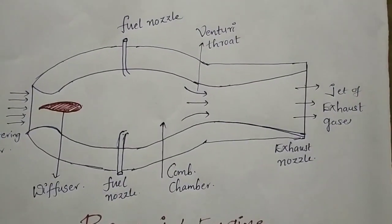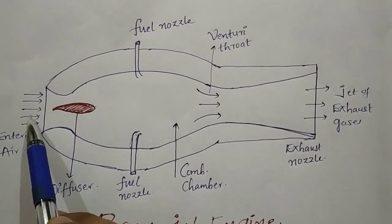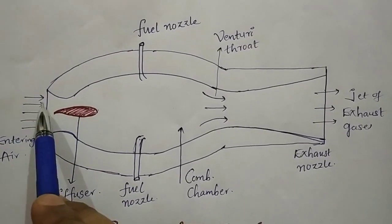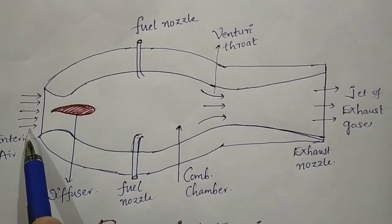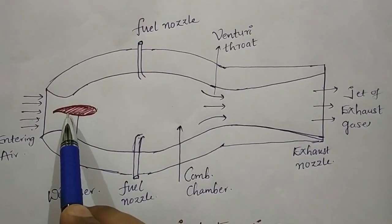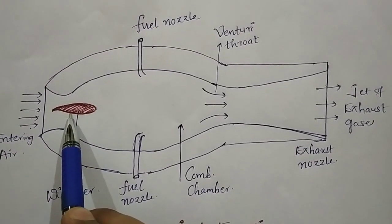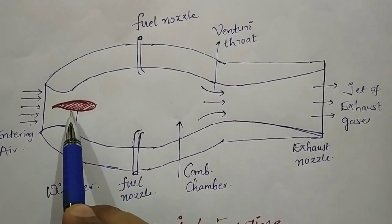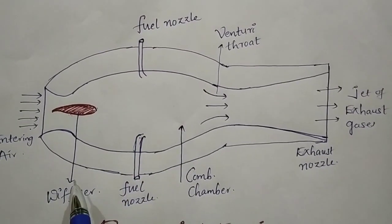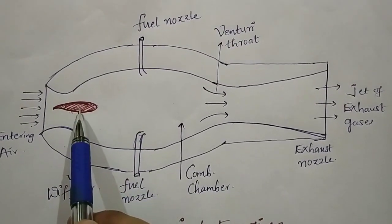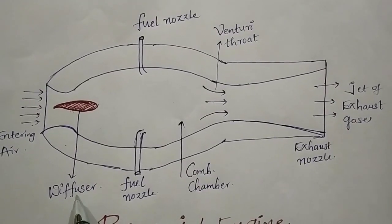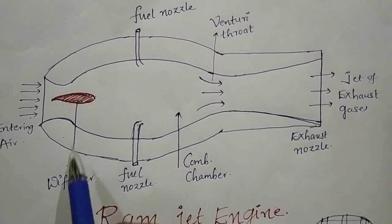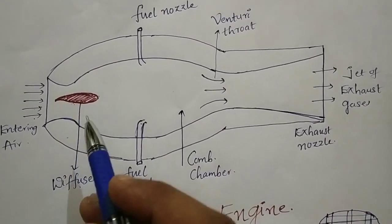During the operation, atmospheric air will be entering into the ramjet engine. In the previous lectures, we used a compressor. The function of the compressor is to take the atmospheric air, compress it, and send the high pressure air into the combustion chamber. But here, in place of the compressor, we are using the diffuser. The function of the diffuser is the reverse of a nozzle.